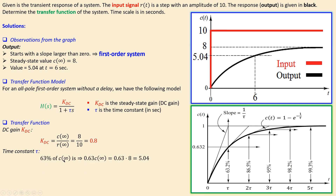So if I calculate 63% of our response, which has a final value of 8: 0.63 times 8 gives 5.04. Now looking at the graph, at that value the time is 6 seconds. So my tau is 6 seconds — that is the time constant for this system. Of course, if a different value had been given at 6 seconds, I would need to determine the time constant differently, but this example is specifically set up so the time constant can be read directly from the graph.